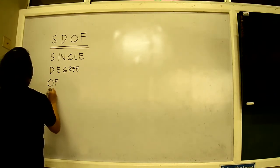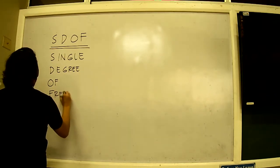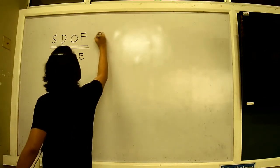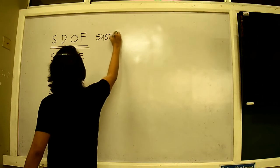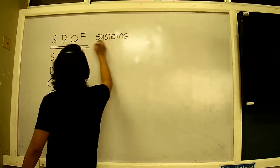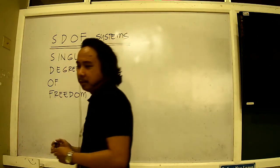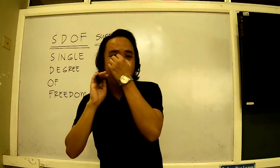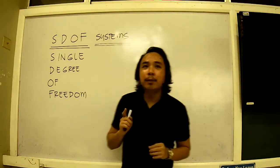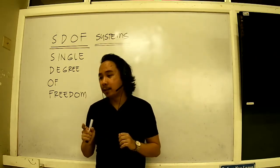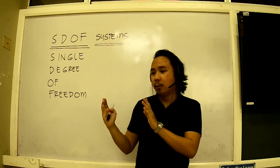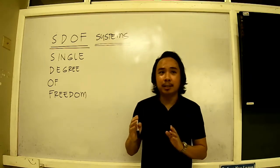of freedom, SDOF systems. When you say single degree of freedom systems, that means there is a degree of freedom in one direction. This means our structure is free to move according to a designated direction